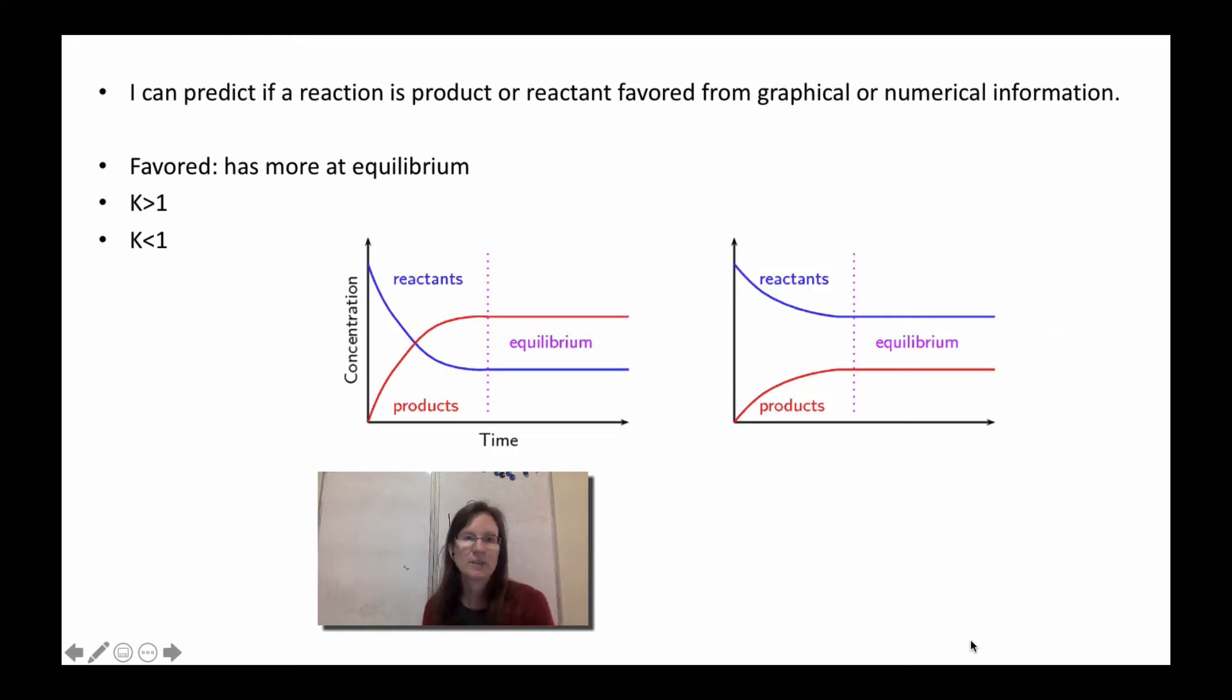Next, I can predict if a reaction is product or reactant favored from graphical or numeric information. Essentially, whatever is favored is whatever you have more of. The graphs are probably the easiest because in that first graph, where at equilibrium I have more products, that means I'm product favored. And in the second graph, because at equilibrium I have more reactants, that means I'm reactant favored. So favored just means at equilibrium you have more of it, meaning you shifted in that direction more.